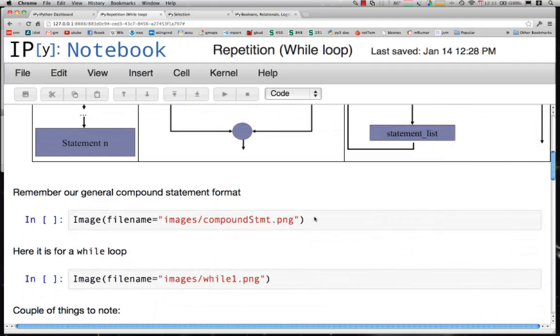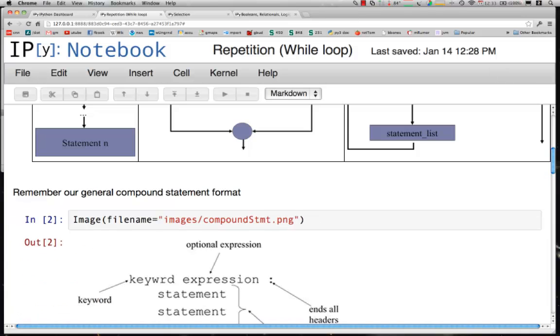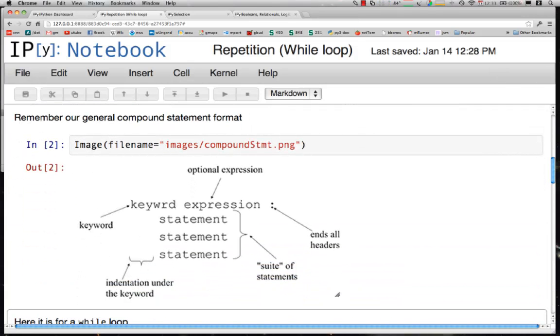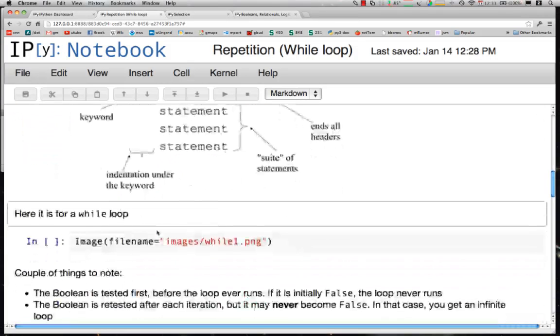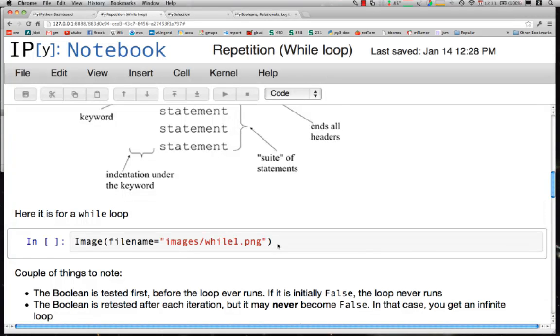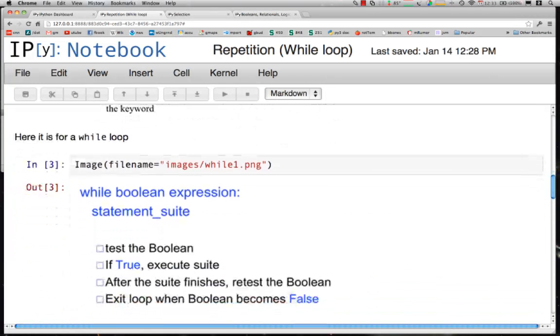You can remember what our general compound statement looks like: a keyword, a Boolean expression, a colon and an indented series of statements. For our while loop, this is what the while loop looks like. The keyword in this situation is while followed by the Boolean expression, followed by the colon and then again an indented series of statements.